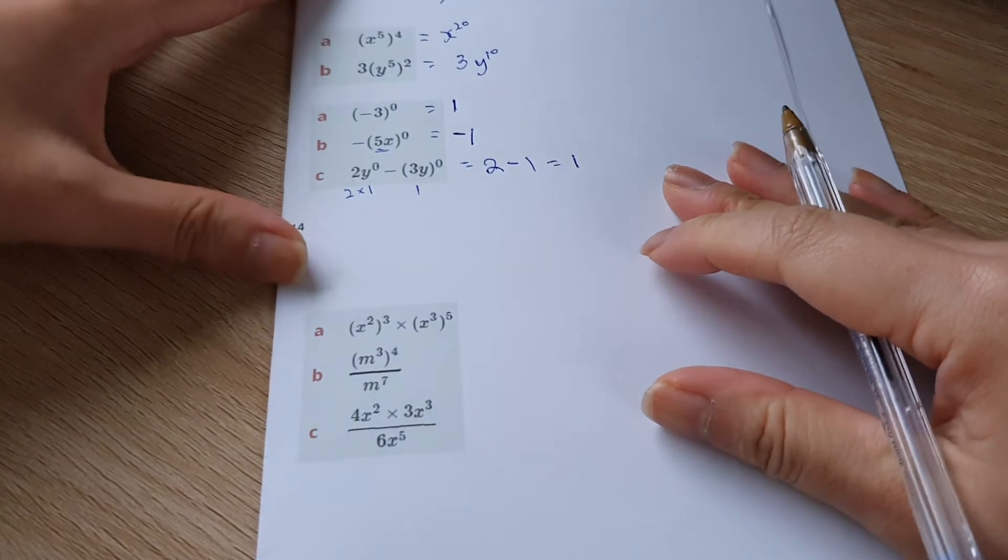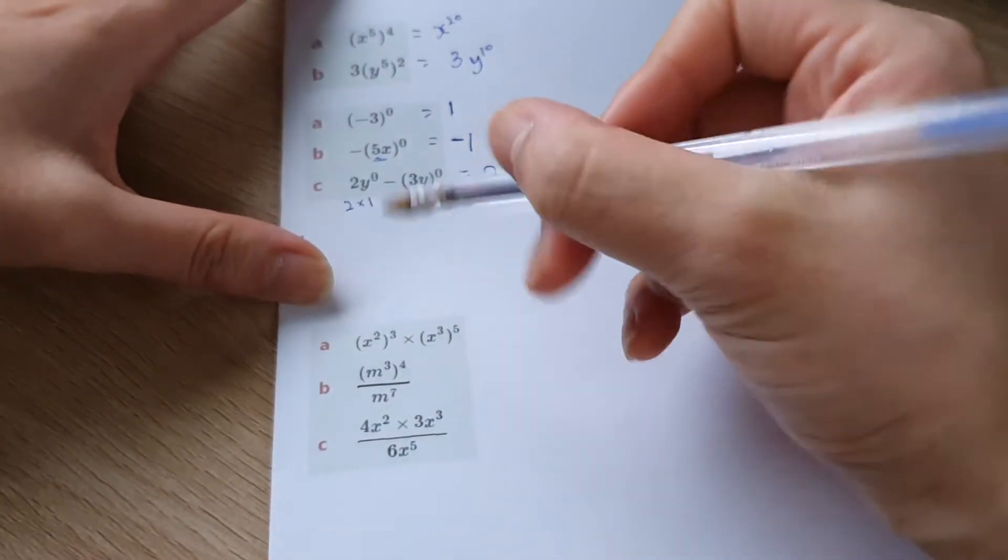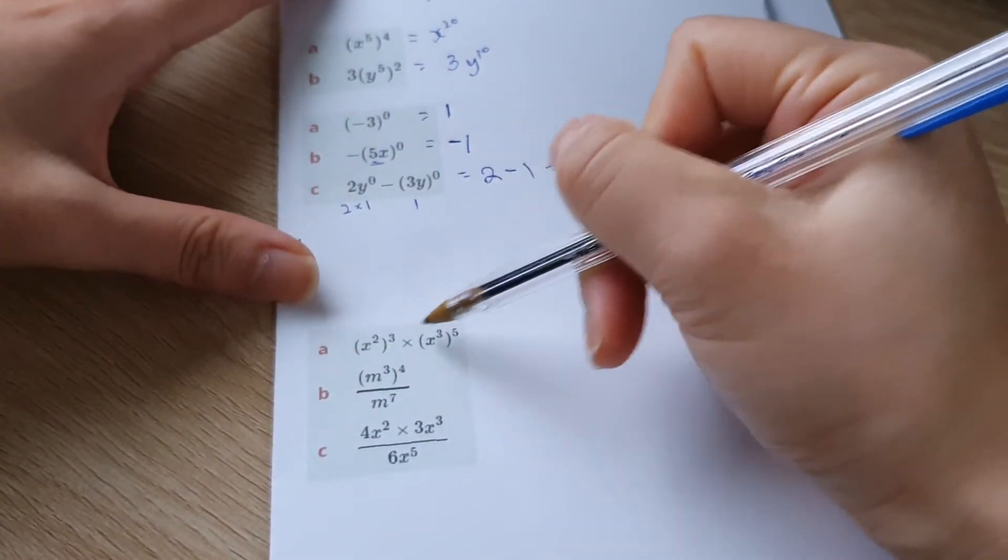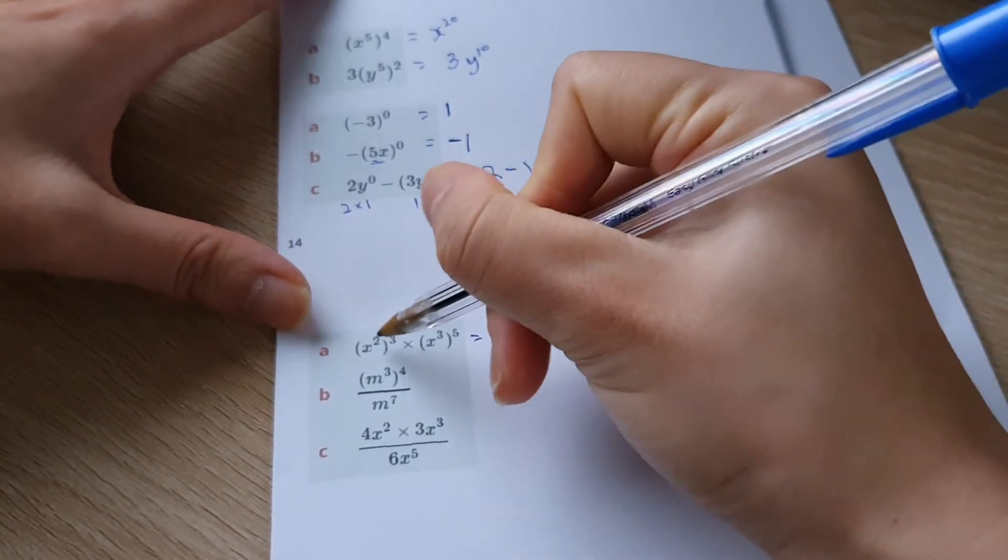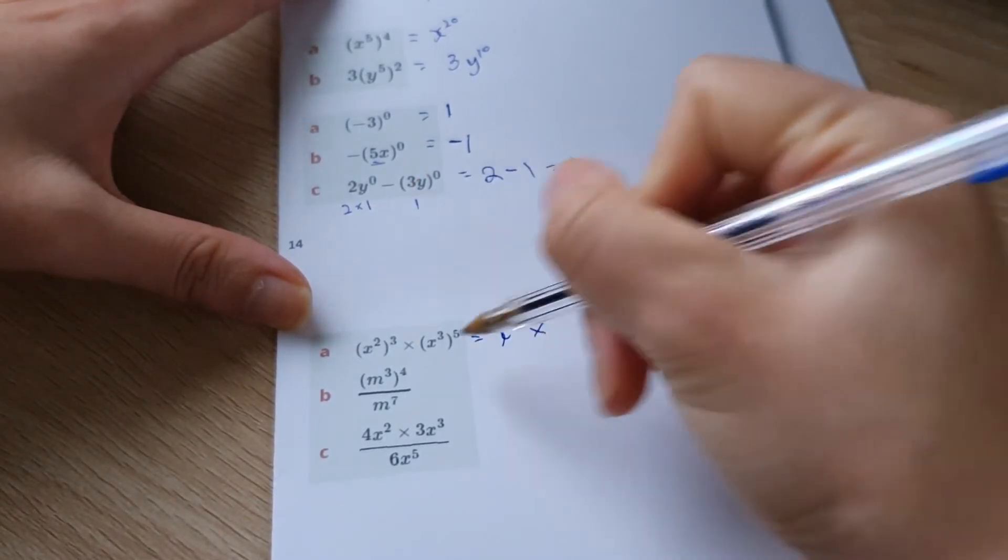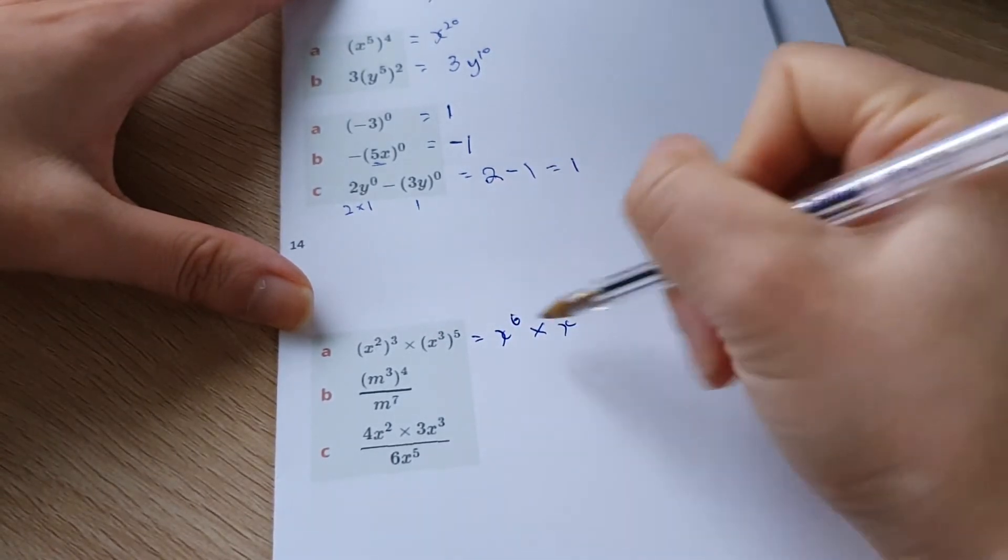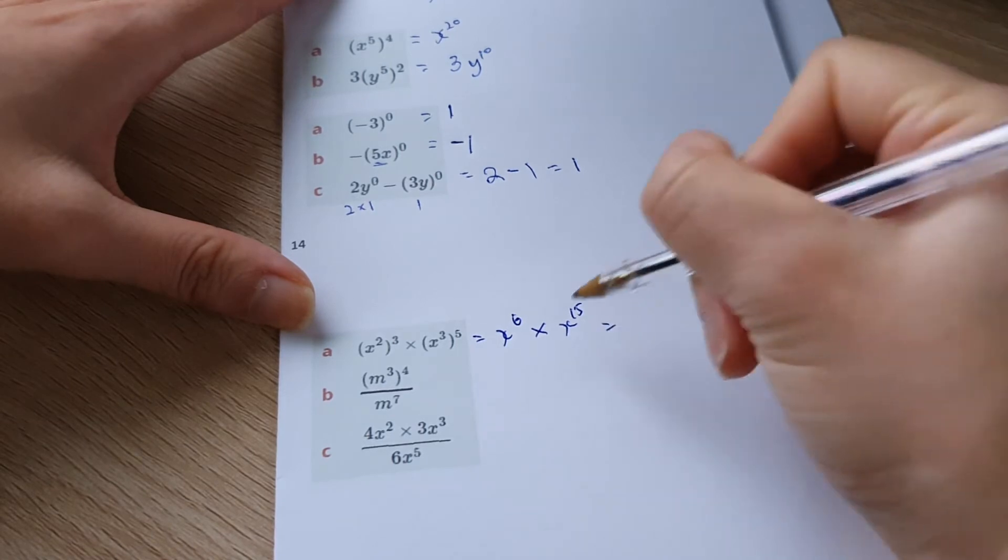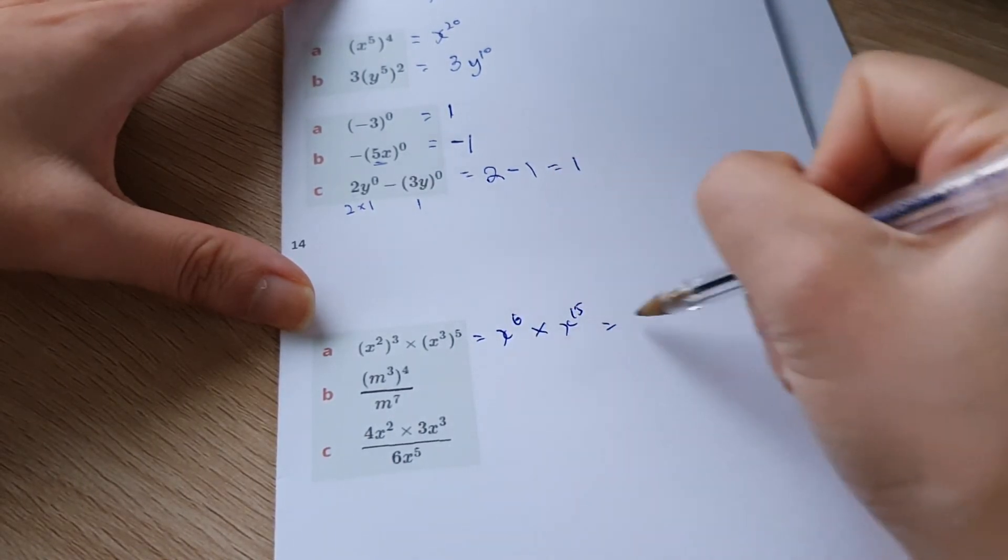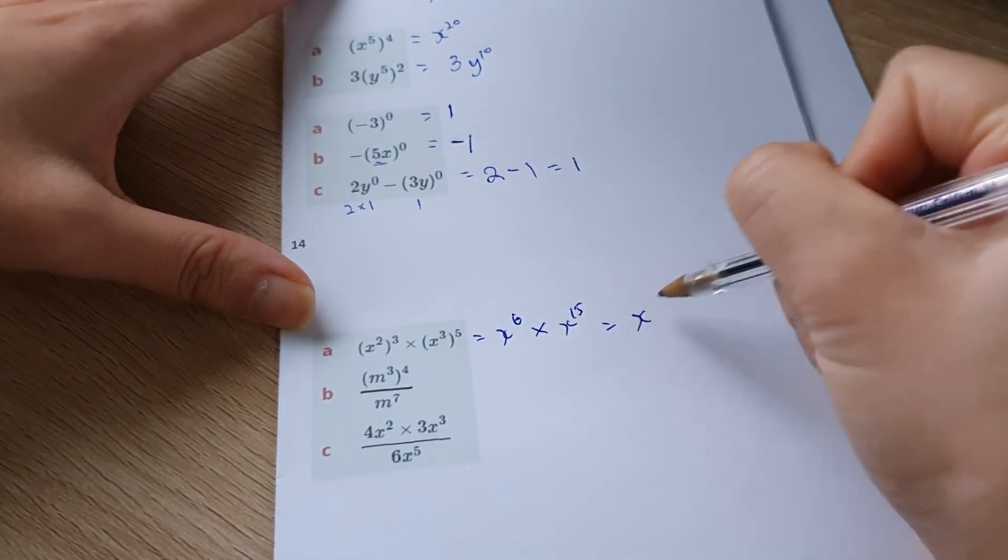Some slightly more difficult ones. We've got some powers raised here. So that's, we're going to have x, two times three, six times x. We always do brackets first. Three times five is 15. And then we're using the first law. We just add the powers, x to the power of 21.